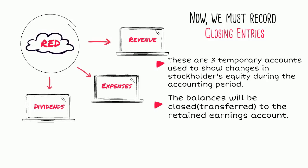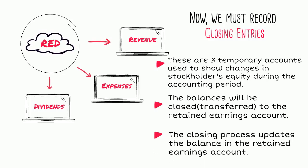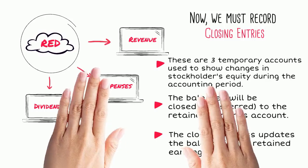The second reason we close temporary accounts is to update the balance of the stockholders' equity account — retained earnings. The temporary accounts were opened to show changes in stockholders' equity during the period. When the period is over, the balances of these temporary accounts are summarized and transferred to the retained earnings account.